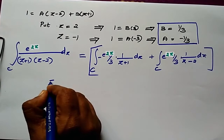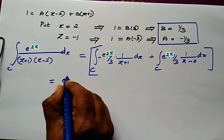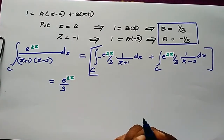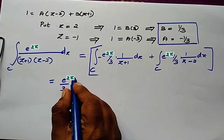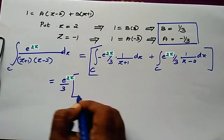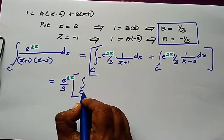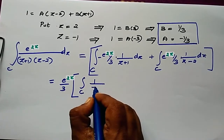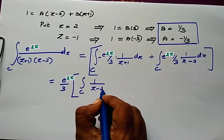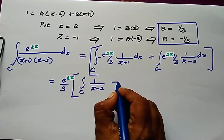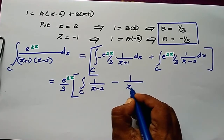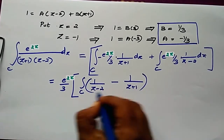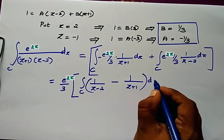Simplifying, taking 1/3 as common factor, we get: (1/3) times integral c of [1/(z-2) minus 1/(z+1)] dz.